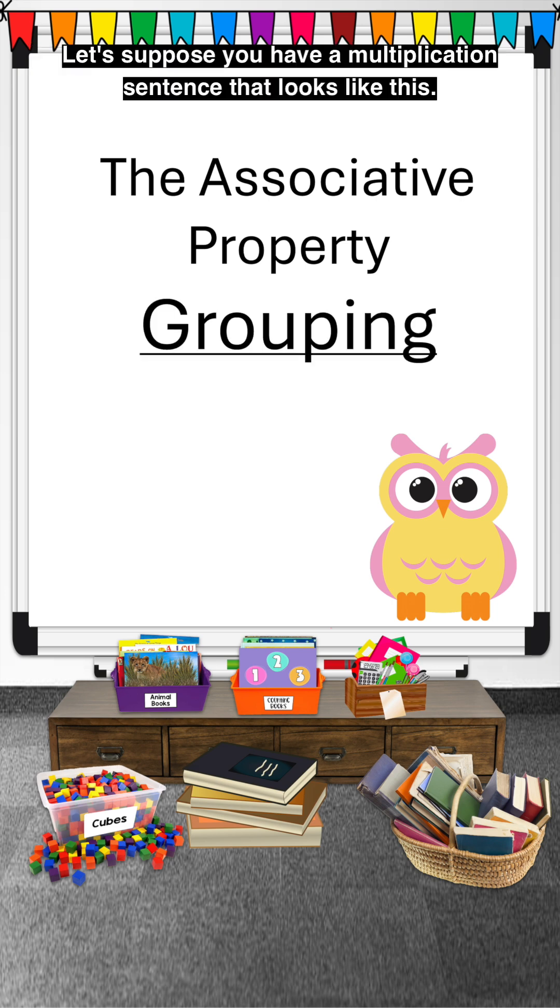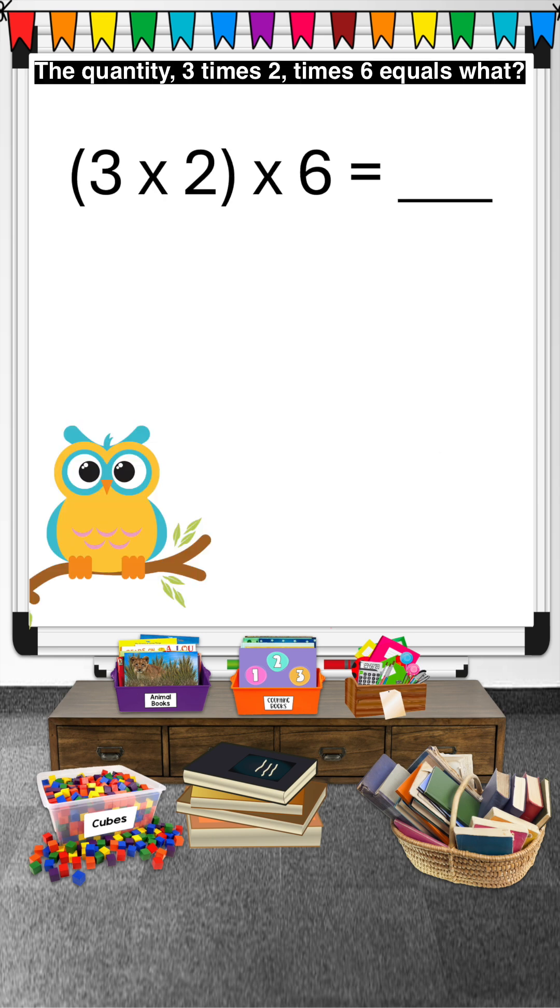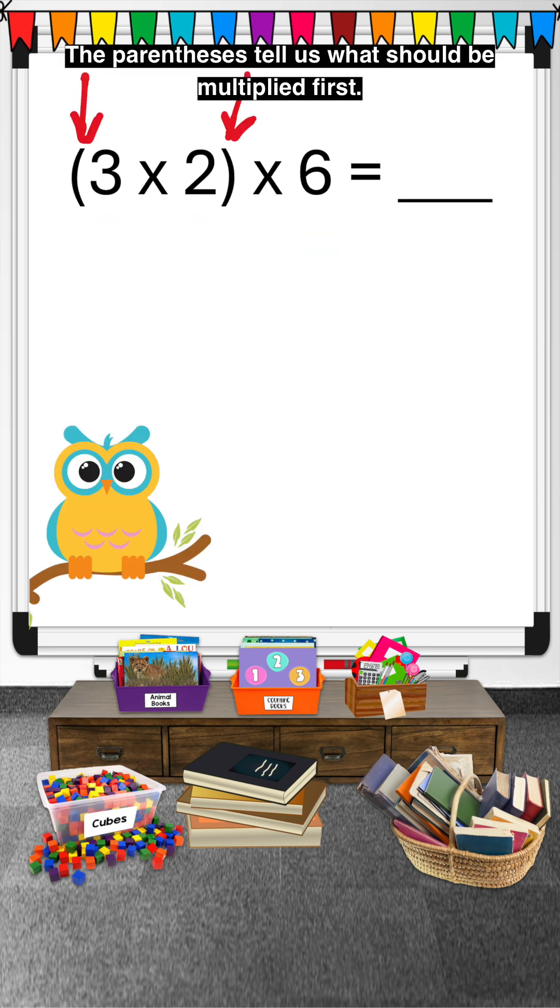Let's suppose you have a multiplication sentence that looks like this. The quantity 3 times 2 times 6 equals what? The parentheses tell us what should be multiplied first.